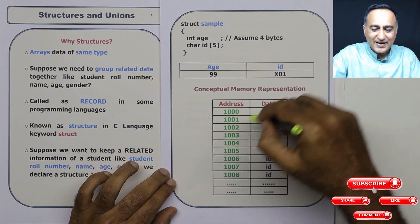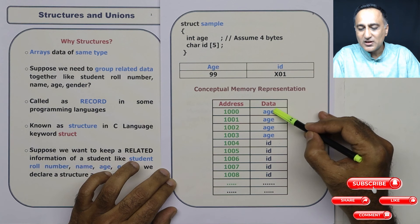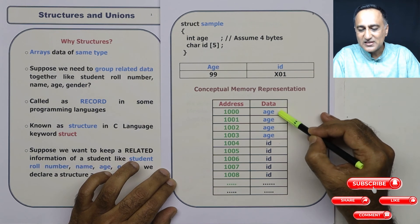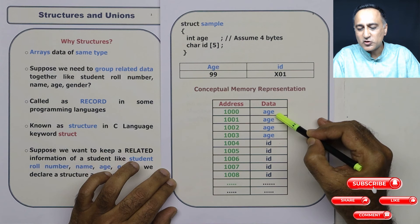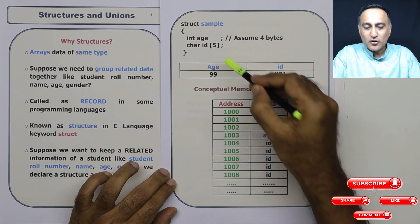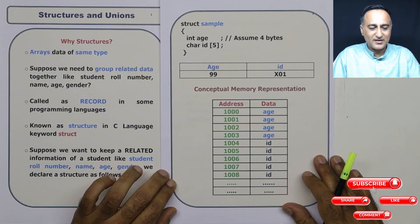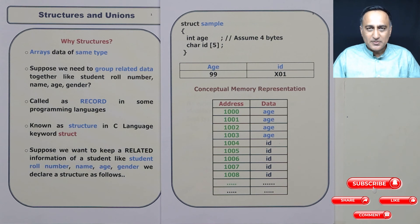So this column is the address, this column is how the data is represented. Don't confuse here that age is stored four times. All that it indicates is there are four bytes available for age to be stored. Similarly, there are total of five bytes available for ID to be stored one byte including for the null character. So the moral of the story here is quite simple.